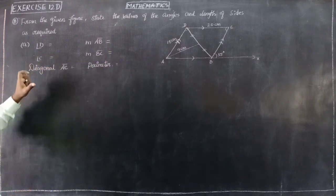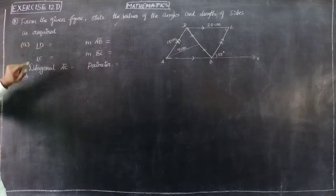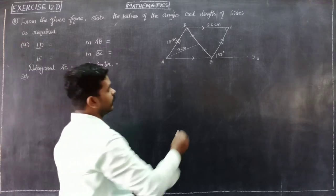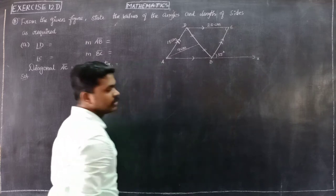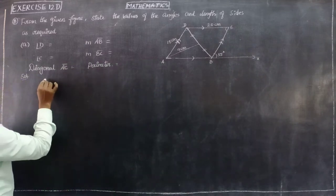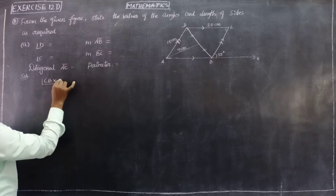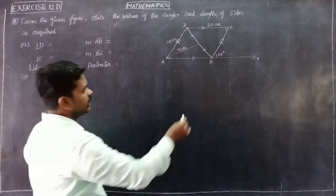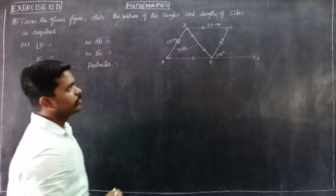This is the answer for the first part. The diagram gives us angle D and angle C. From the diagram, angle CBX equals 55 degrees.